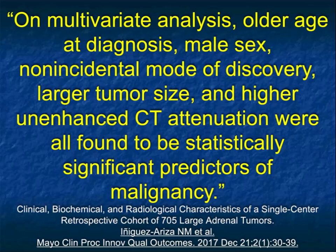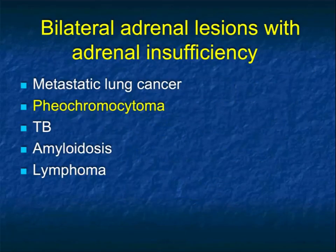Larger tumor size sounds worse, of course. Most things under 4 cm are adenomas, but they don't need to be - could be pheos, could be mets. Similarly, over 4 cm could be adenomas or hemorrhage, but could also be pheo or primary tumor.